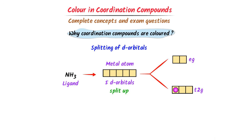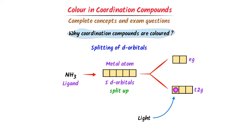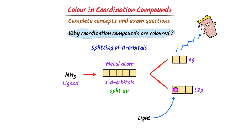Now listen carefully. Let visible light fall on this electron. After absorbing a specific wavelength, this electron will jump from a lower energy orbital to a higher energy orbital. After some time, this electron will radiate the absorbed wavelength and jump back to the lower energy level. This radiated color by the electron enters our eyes and we see that the coordination compounds are colored.